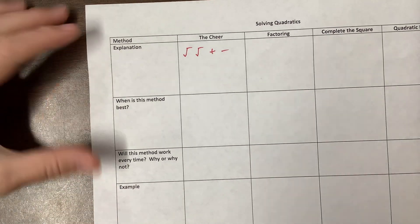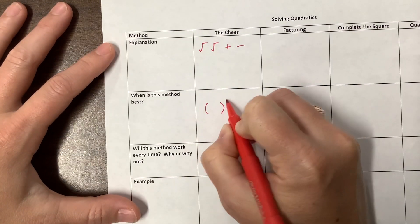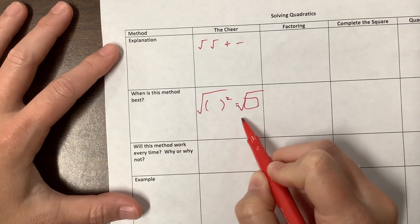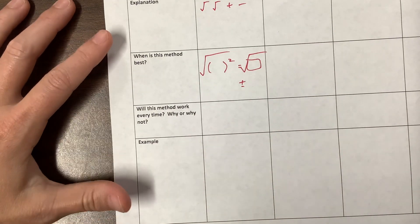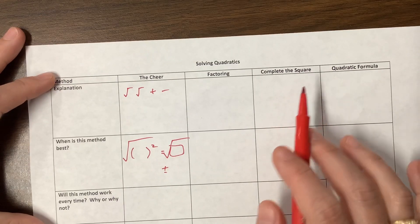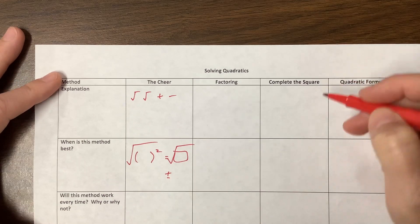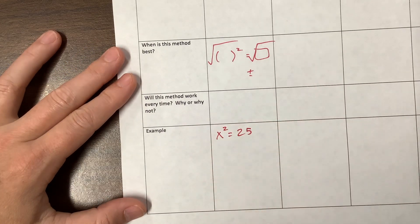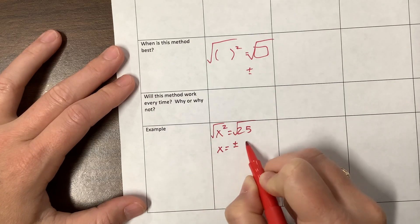So when is this method best? Any time that I've got something squared is equal to something. Then I can just go square root, square root, plus, minus. Will this method work every time? Sort of — it's also the last step to completing the square. The example: x squared equals 25. I go square root, square root, plus, minus, and I have x is equal to plus or minus 5.